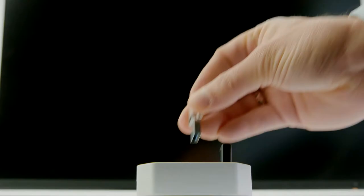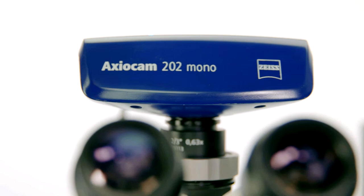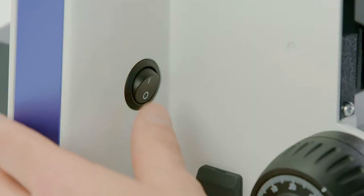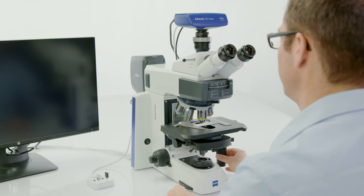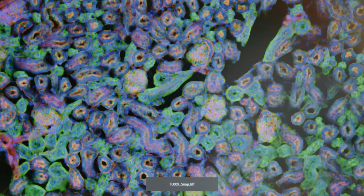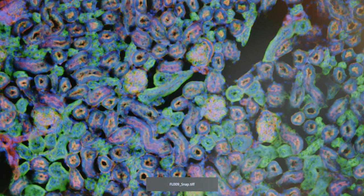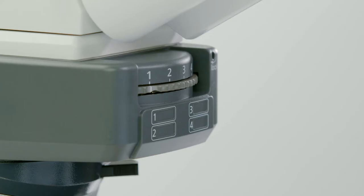Insert a USB stick into your smart AxioCam microscope camera, switch on the microscope, and place your sample on the stage. The sample shown is a mouse kidney section stained with DAPI, AF 488, and AF 568.